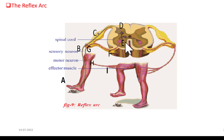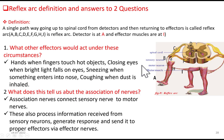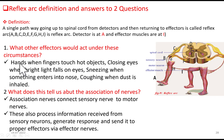Now there are a few questions asked under this concept in the textbook. Question one: what other effectors would act under these circumstances? Examples of effectors in reflex action include: hands, when fingers touch hot objects we pull back our hands involuntarily; closing eyes when bright light falls on them; sneezing when something enters the nose; and coughing when dust is inhaled.